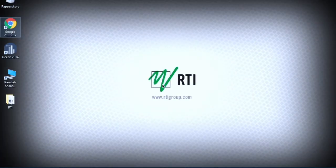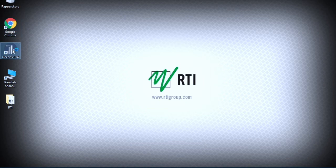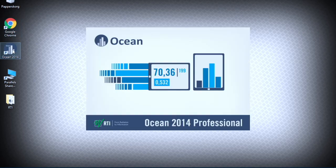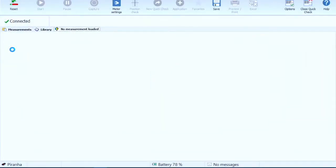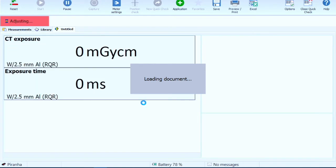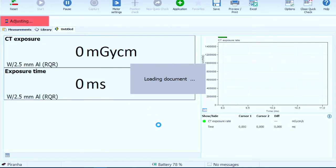Start Ocean by clicking the icon. Ocean will automatically connect to the piranha. Thanks to its plug and play function, Ocean immediately starts to adapt to the optimal settings for measuring with the ion chamber.